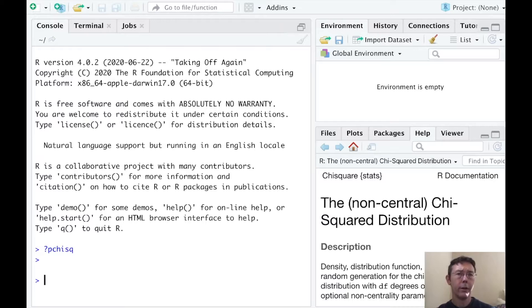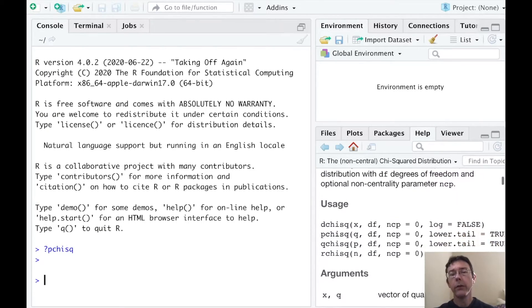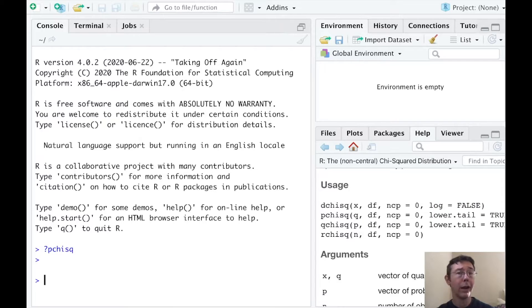So here we are in R. I've pulled up the help file for the chi-squared distribution using the command question mark pchisq. Here on the right, you can see we've got a quick rundown of all four of the major chi-squared functions in R. So if you forget any of the parameters, you can always just glance at this. Or if you need to do something a little more sophisticated than what I'm describing here, for example, using a non-central chi-squared distribution.